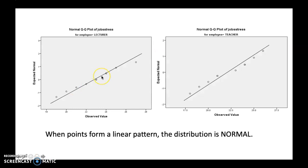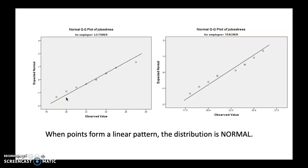You can also support the normality test by looking at a graph — in this case, a Q-Q plot. When reading a Q-Q plot, if the dots are near to the line, it means you have a linear pattern. When points form a linear pattern, the distribution is normal. Looking at the Q-Q plot for lecturer and teacher, we can see that the data is normally distributed because of the linear pattern.